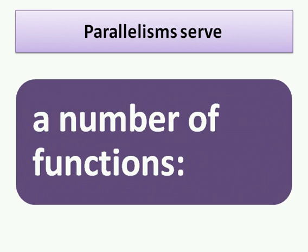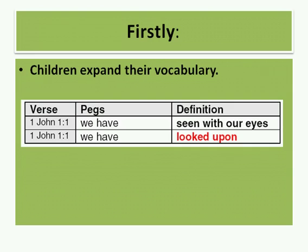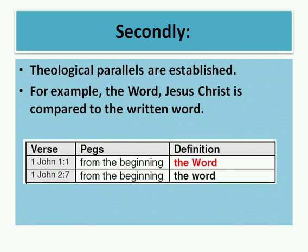Using these umbrella phrases — these parallelisms — serves a number of functions and helps our understanding in a number of ways. Firstly, as we've already seen, children expand their vocabulary in this way. In verse 1 we have 'we have seen with our eyes' and 'we have looked upon.' So there we have the umbrella phrase 'we have,' and the definition. So 'seen with our eyes' means 'looked upon.' Secondly, doctrinal parallels are established in this pattern matching. For example, the Word, capped in the King James Version — Jesus Christ, the Word — is compared to the written word because of the umbrella phrase 'from the beginning' in verse 1, and 'from the beginning' in chapter 2 verse 7. And so we can build our meanings.